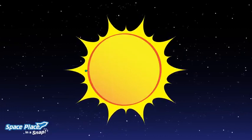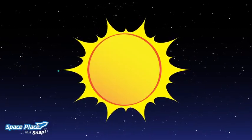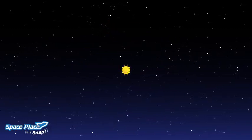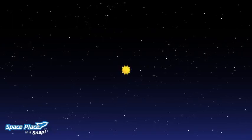The planet blocks a small amount of light from the star. We can see a very small change in the star's brightness. This is how we can tell there could be a planet there.